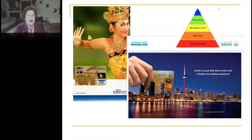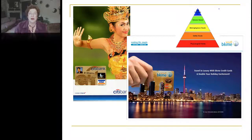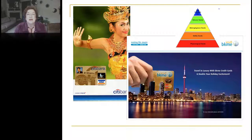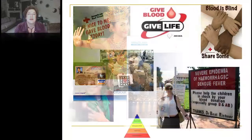The Citibank ad shows someone important swiping their credit card across the skyline — they're in total control with lots of power over their environment. These ads aren't appealing to safety needs; they're appealing to esteem needs. Maslow's hierarchy of needs is a very effective tool for conceptualizing where audiences are and what kind of messages will be effective for them.